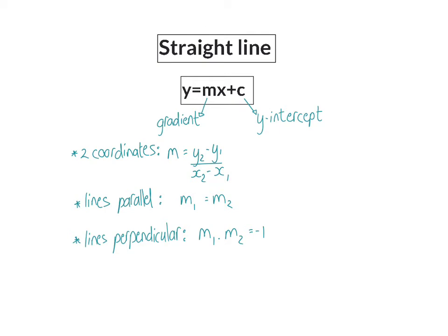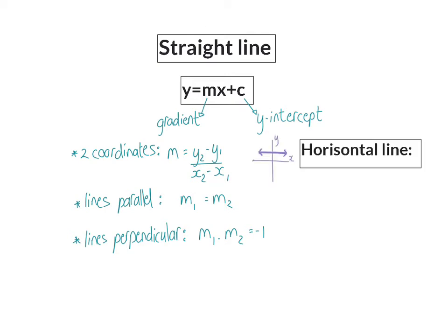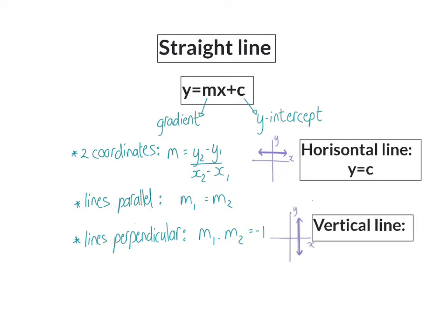And then we have two exceptions. Firstly, if we have a horizontal line, then the gradient is 0, and the line is simply y is equal to the constant. Or we can have a vertical line, and a vertical line does not have a y-intercept, but the x value always stays the same, so we can say x is equal to a constant.